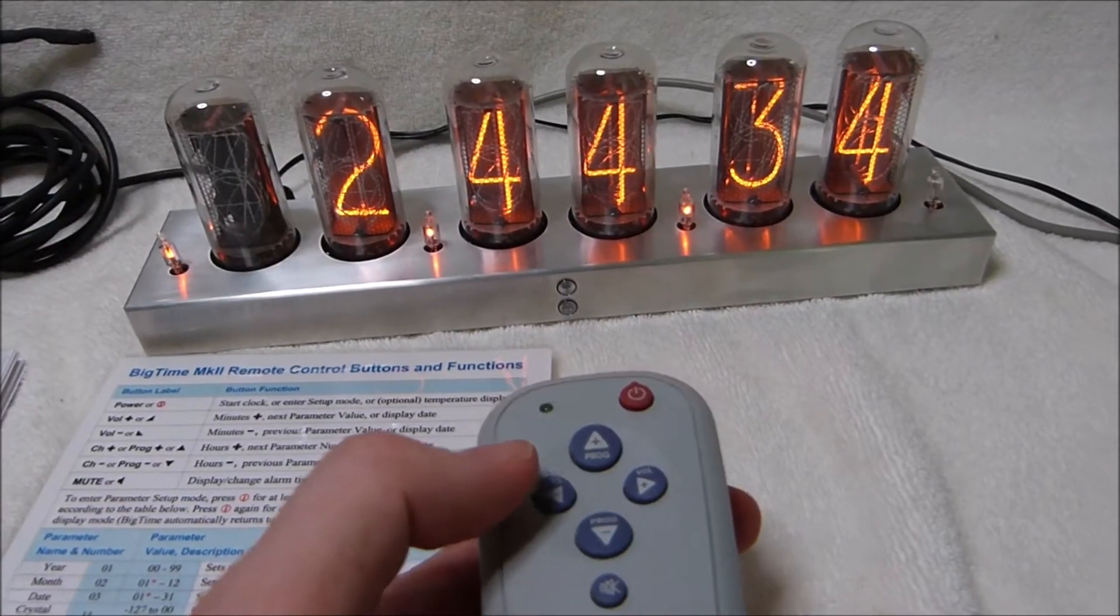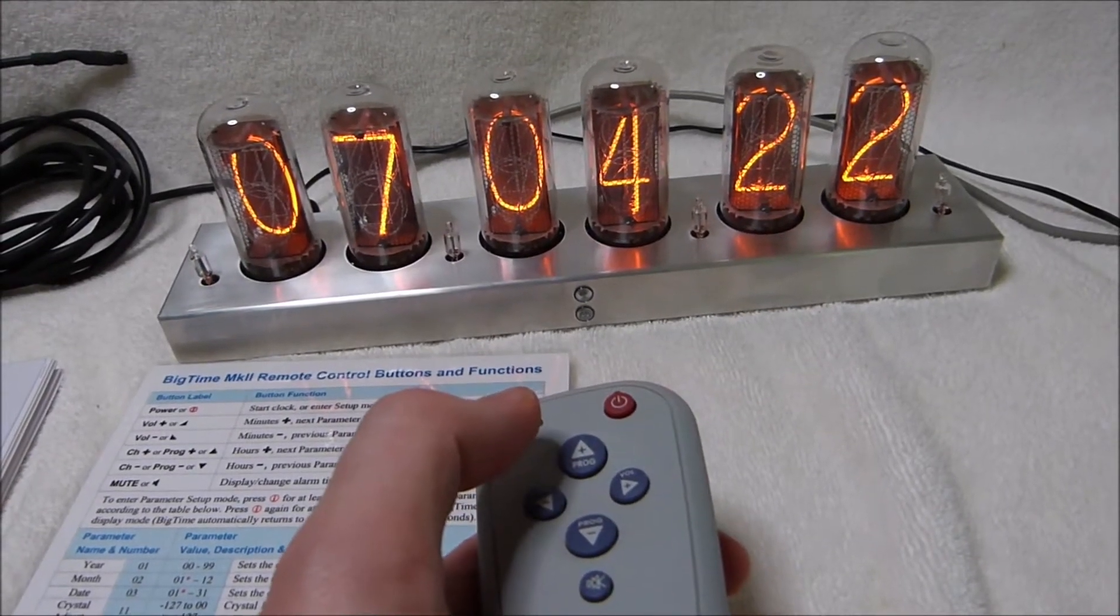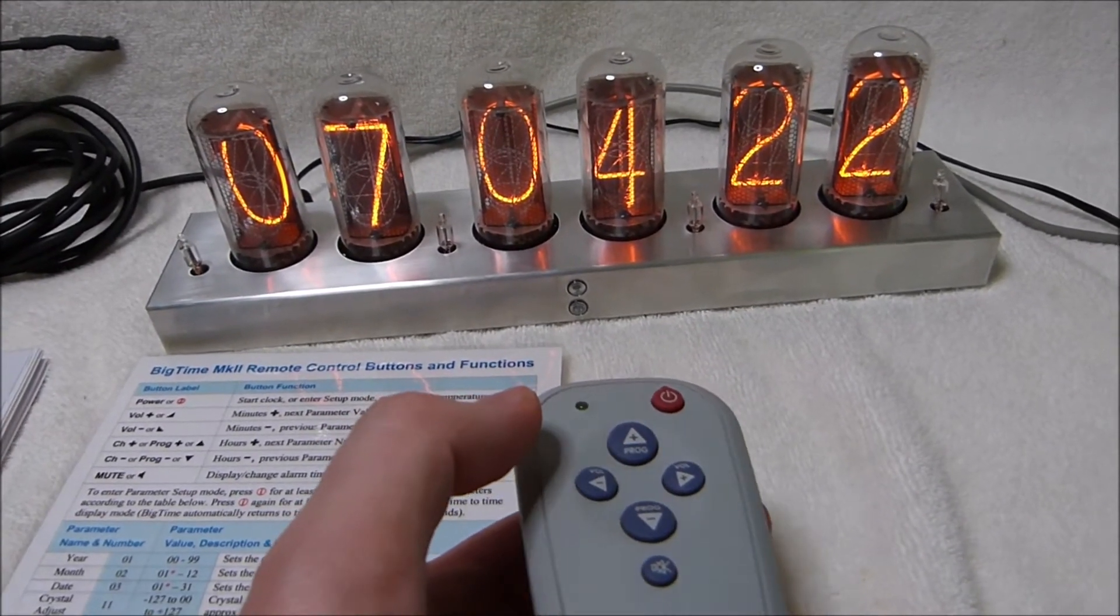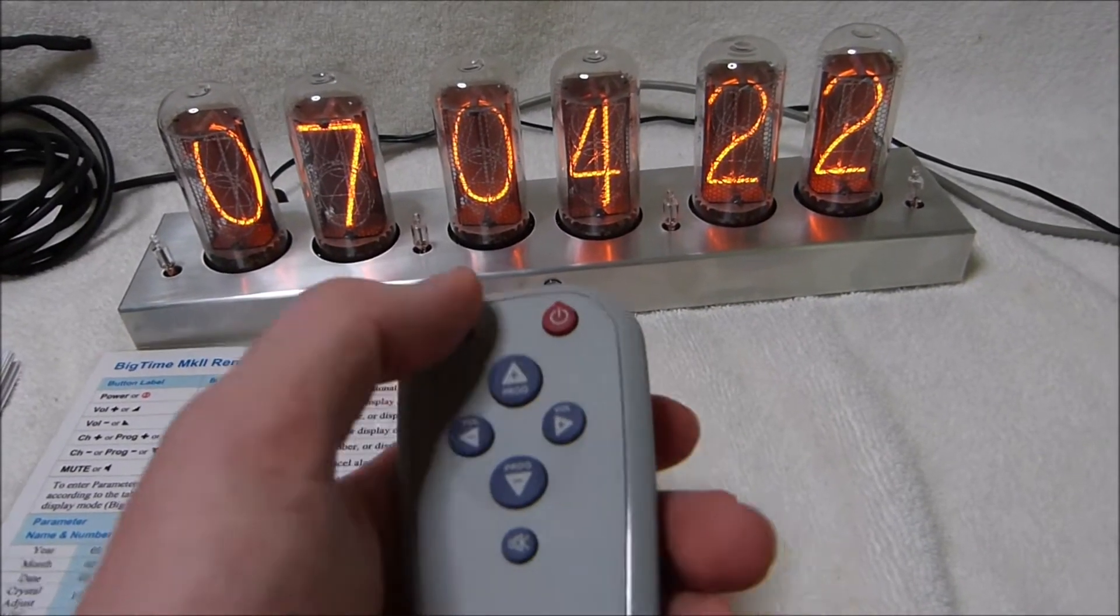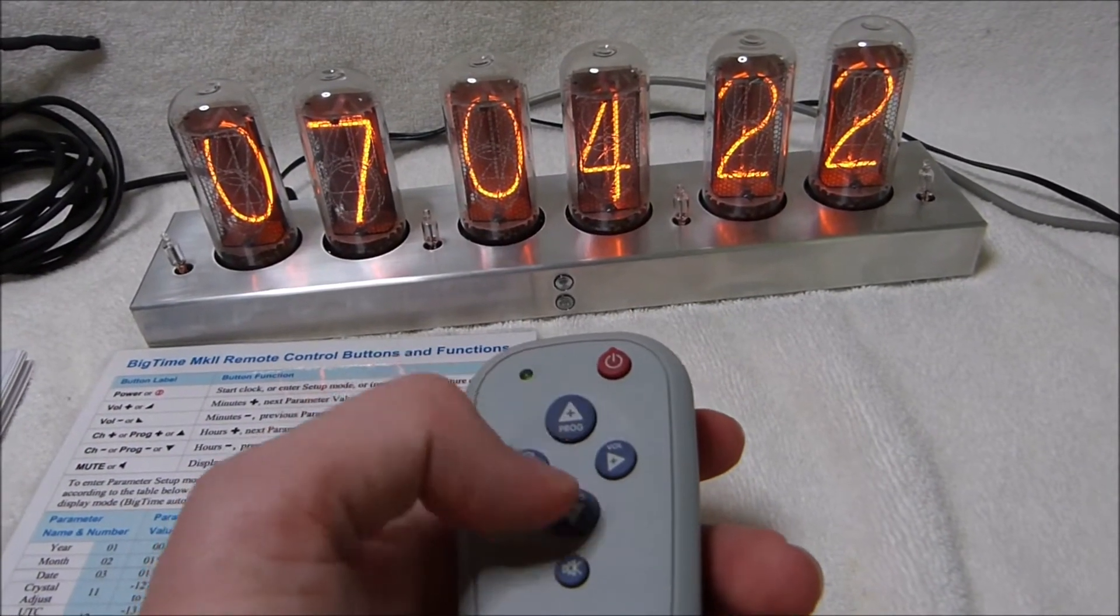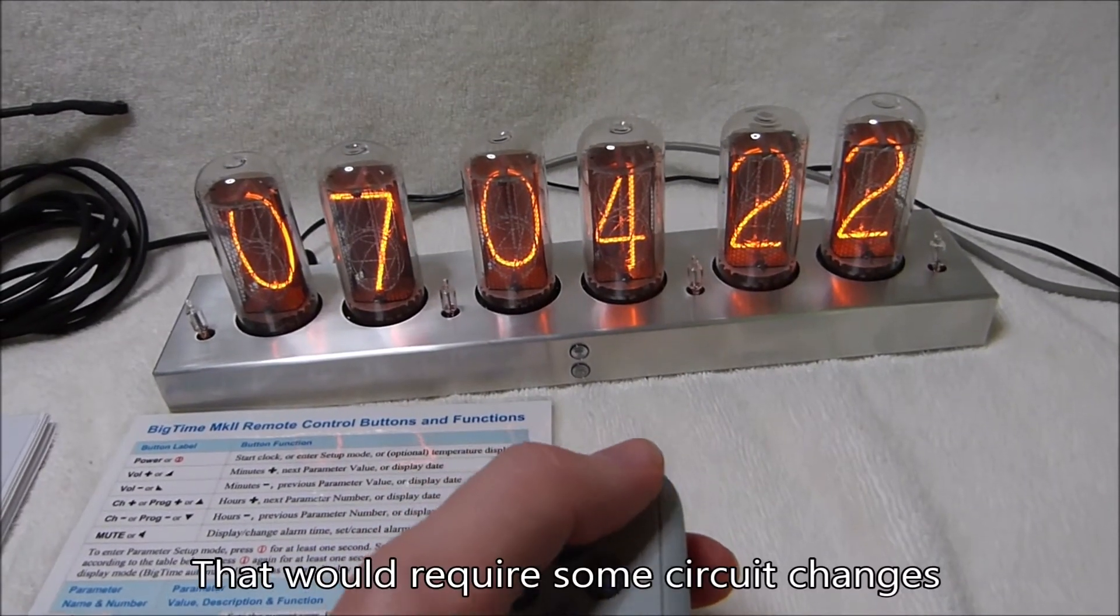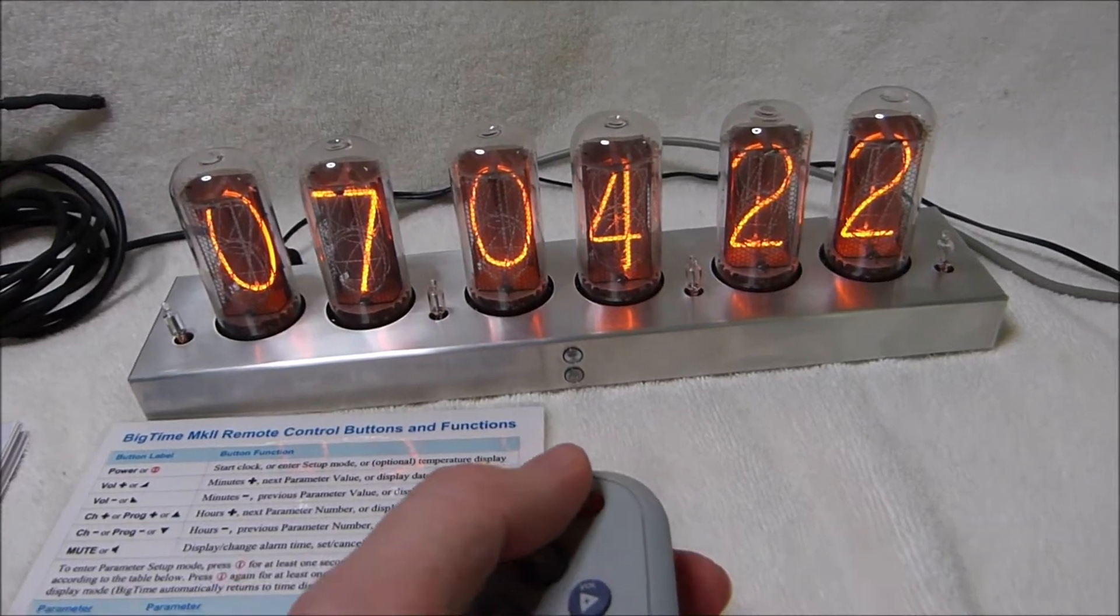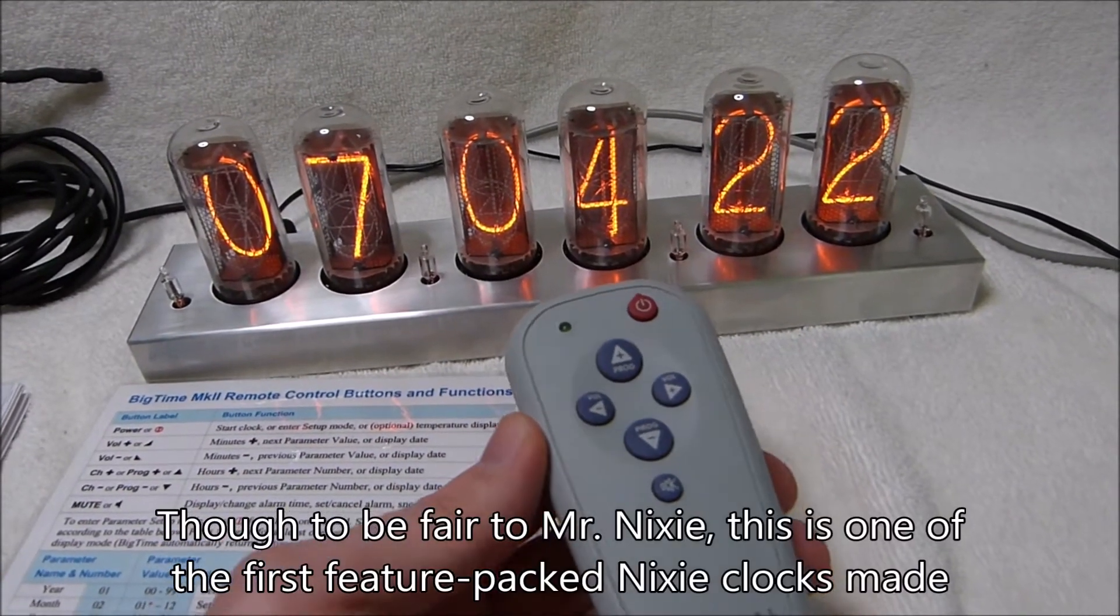By pressing almost any one of the other buttons on the remote, you can display the date. Personally I wish they had used one or two buttons for the date, and one of the other pairs of buttons here for the temperature, and then use the power button to turn on and off the high voltage supply of the clock. That would have been nice. And some other clocks do have that feature.